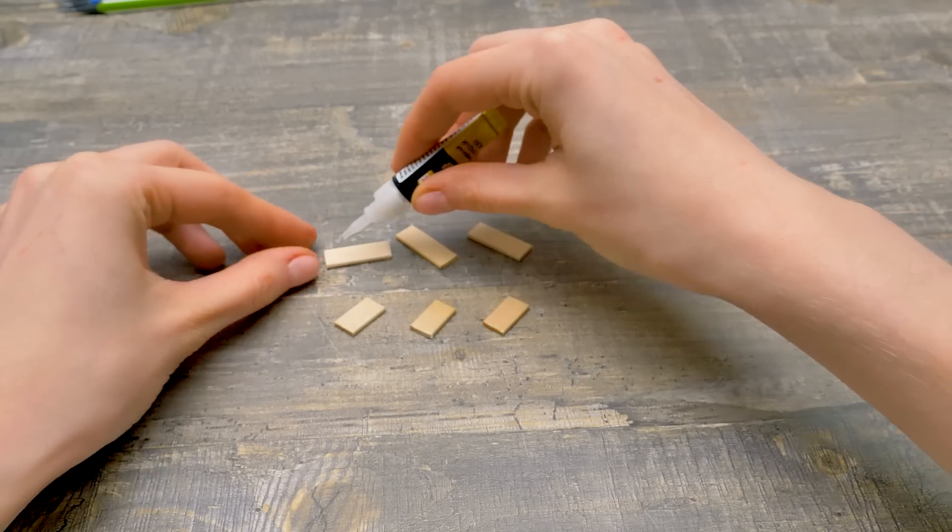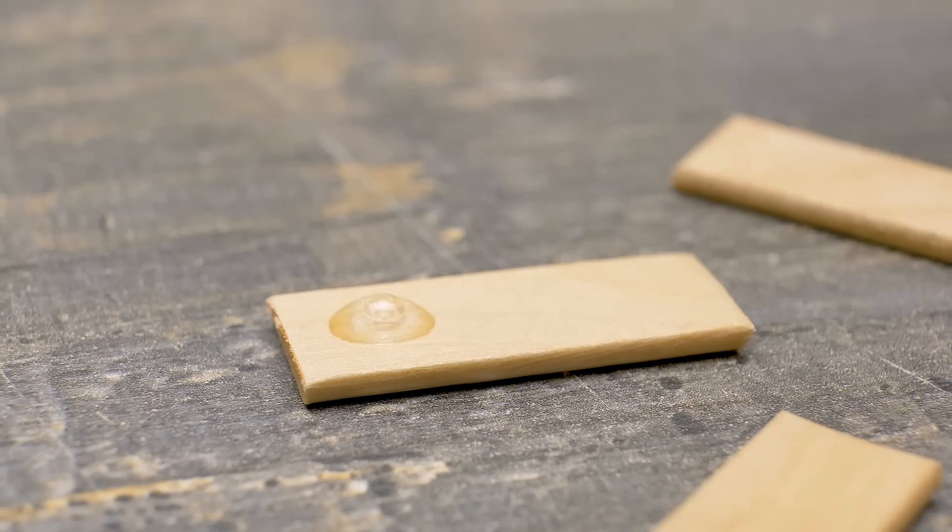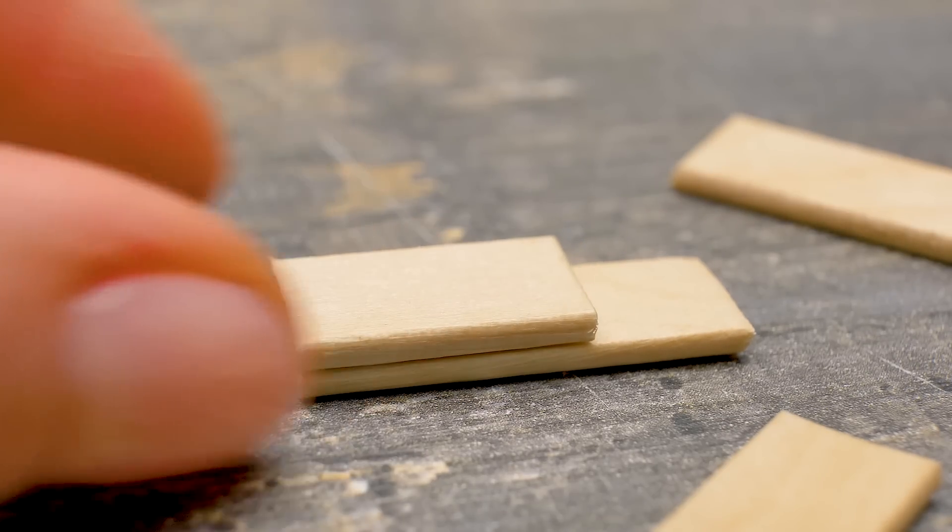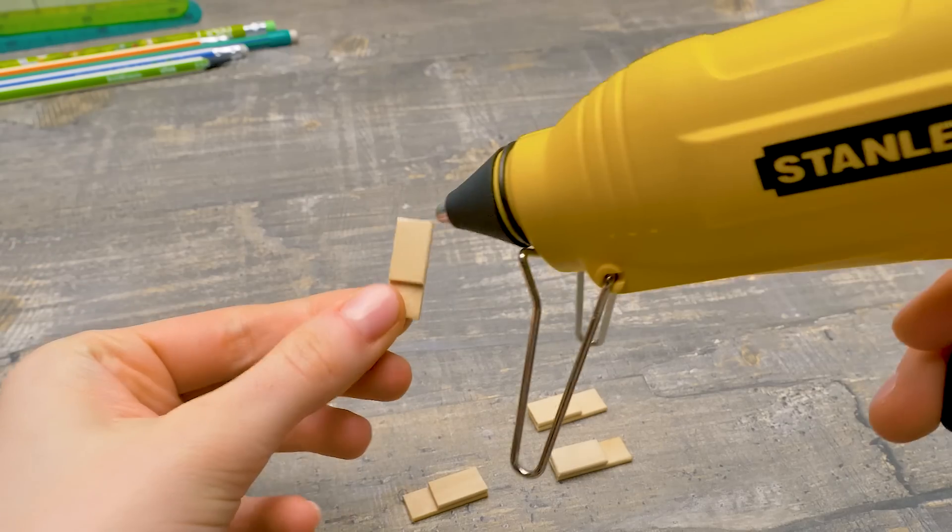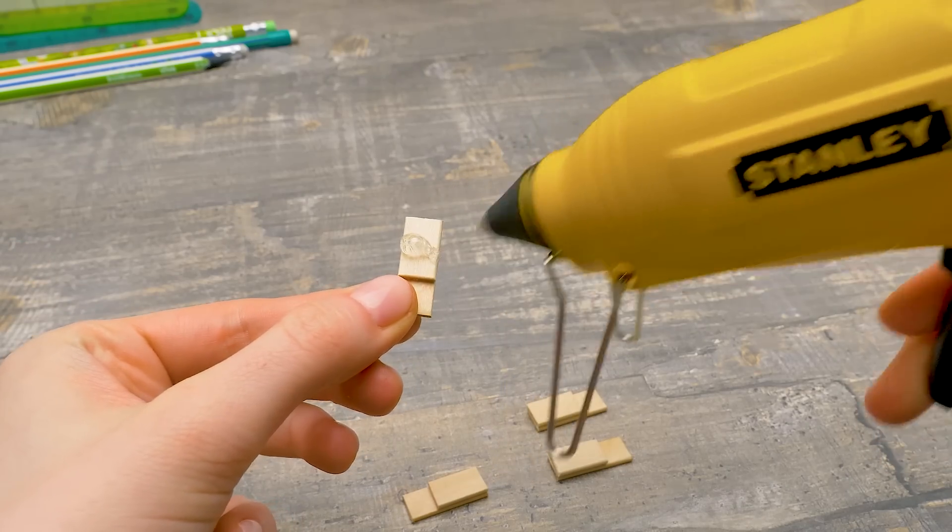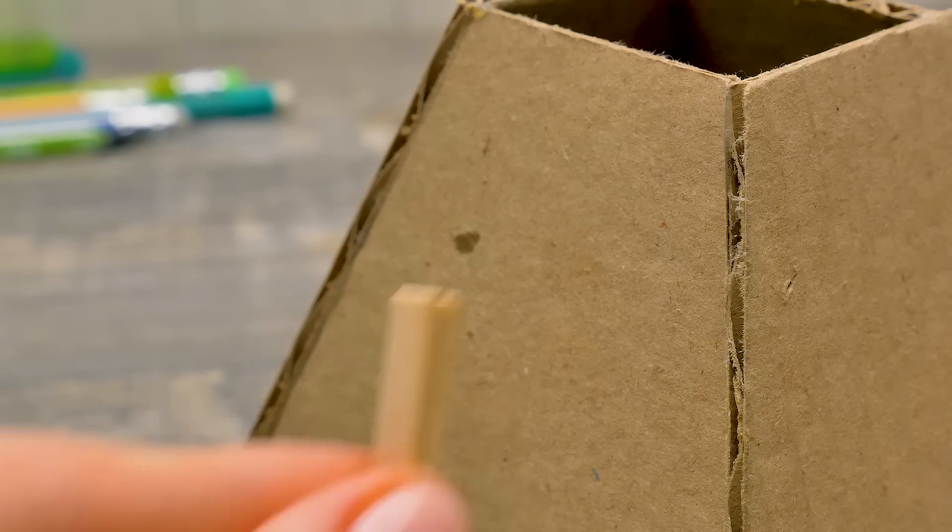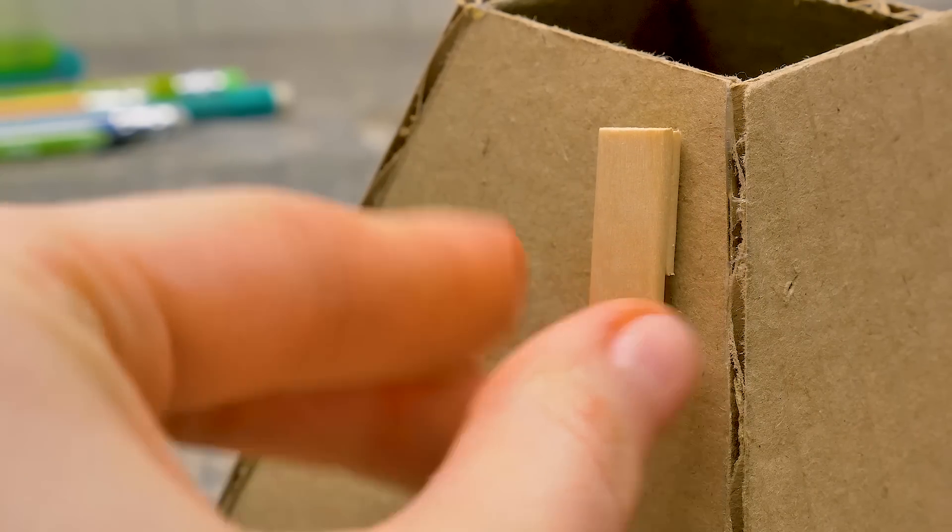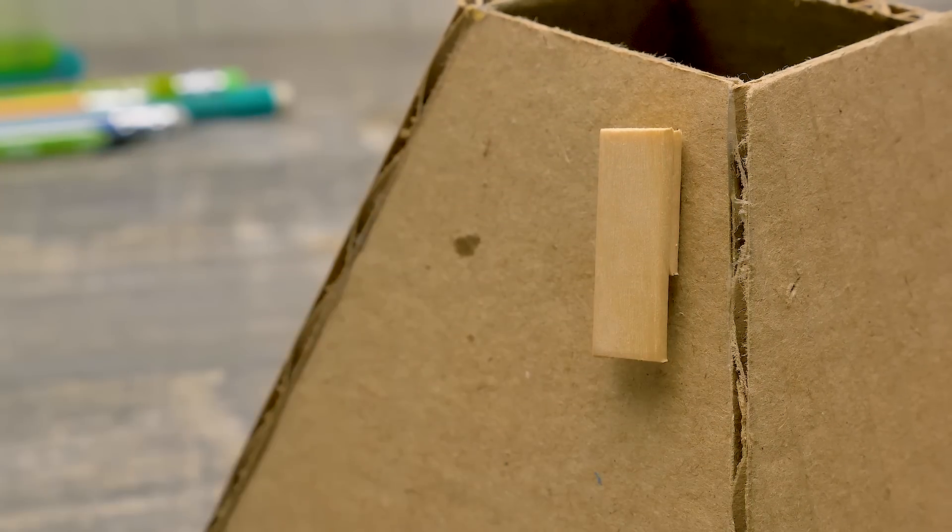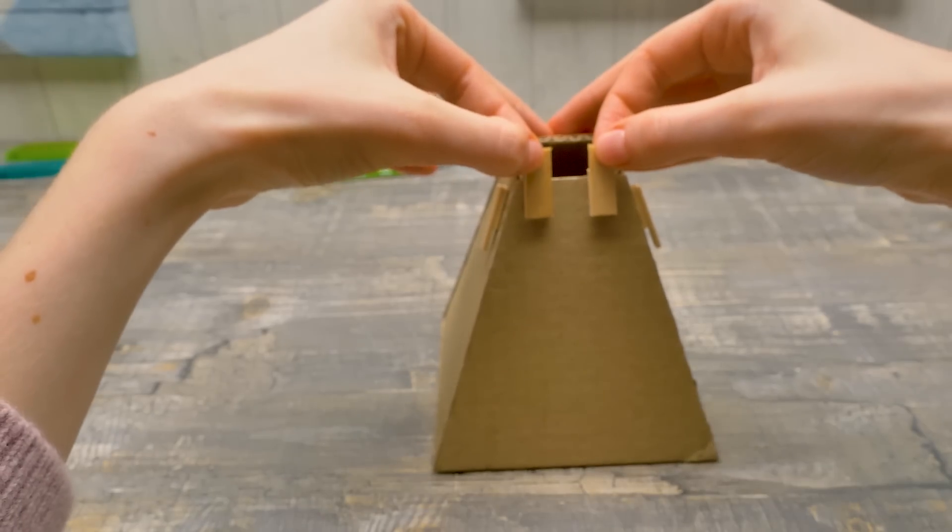Now let's pair the pieces and glue them together. Now I'll apply some hot glue and attach these pieces to the base securely. Like this. Two on the sides and two in the front.